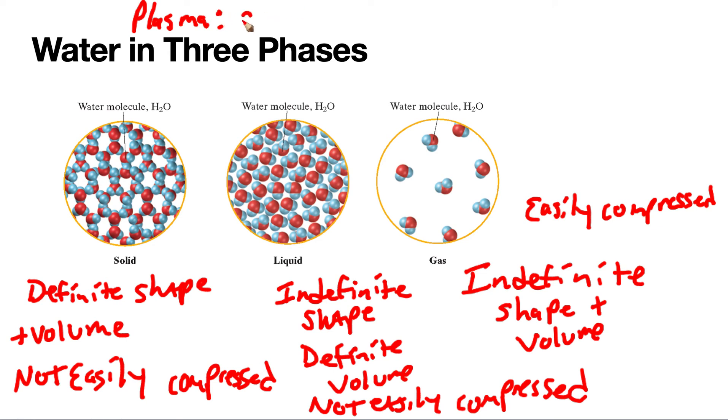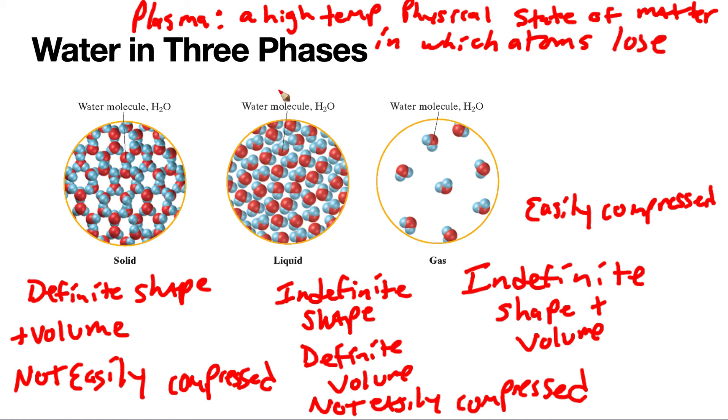Plasma is a high-temperature physical state of matter in which atoms lose most of their electrons. We'll learn that electrons are particles that make up atoms.